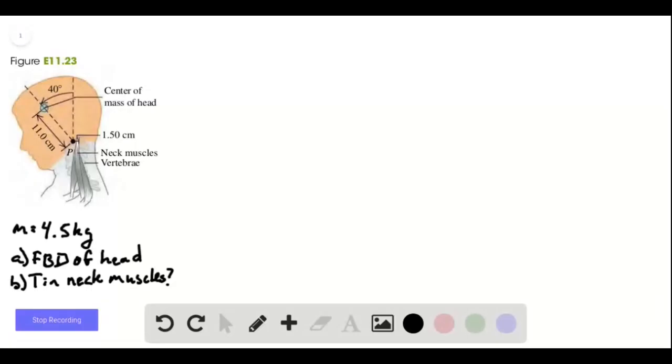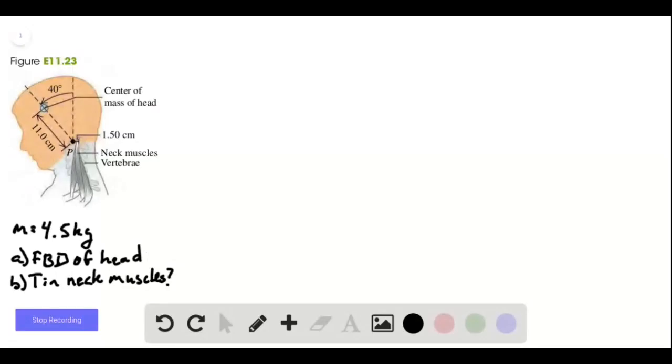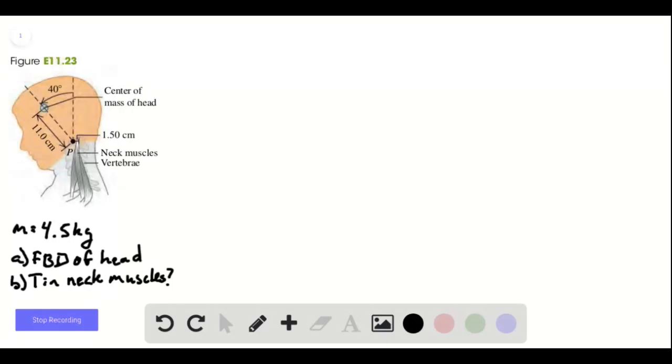Her head is a mass of 4.5 kilograms. The center of mass of her head is 11 centimeters away from where it pivots on the uppermost vertebra, and the neck muscles involved with holding her head up are attached 1.5 centimeters away from that pivot point.